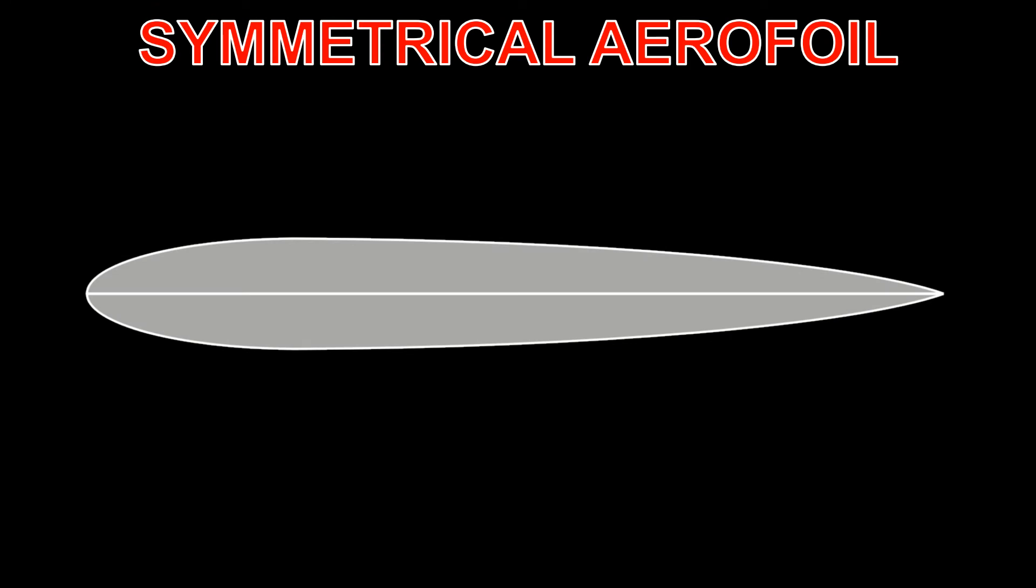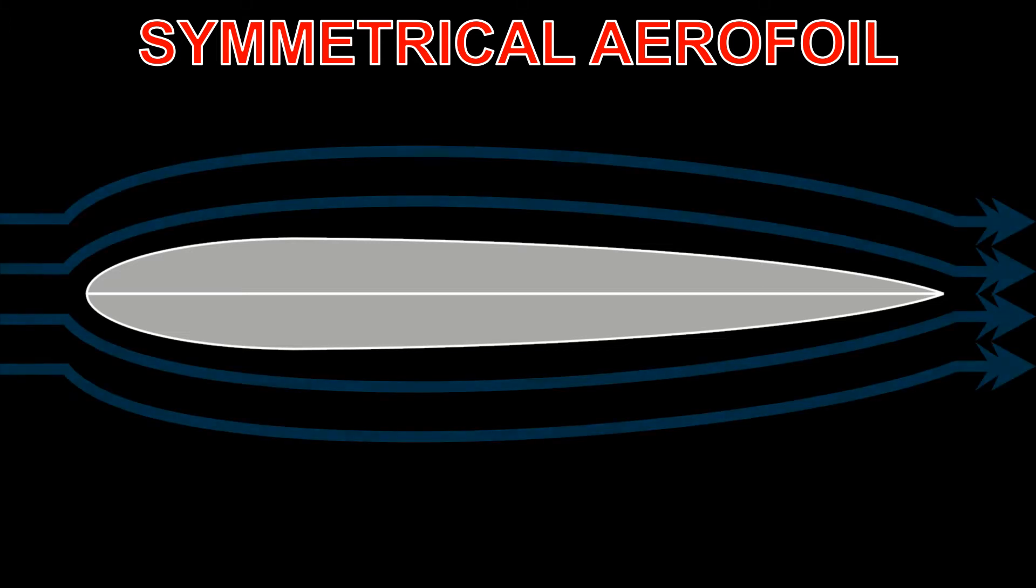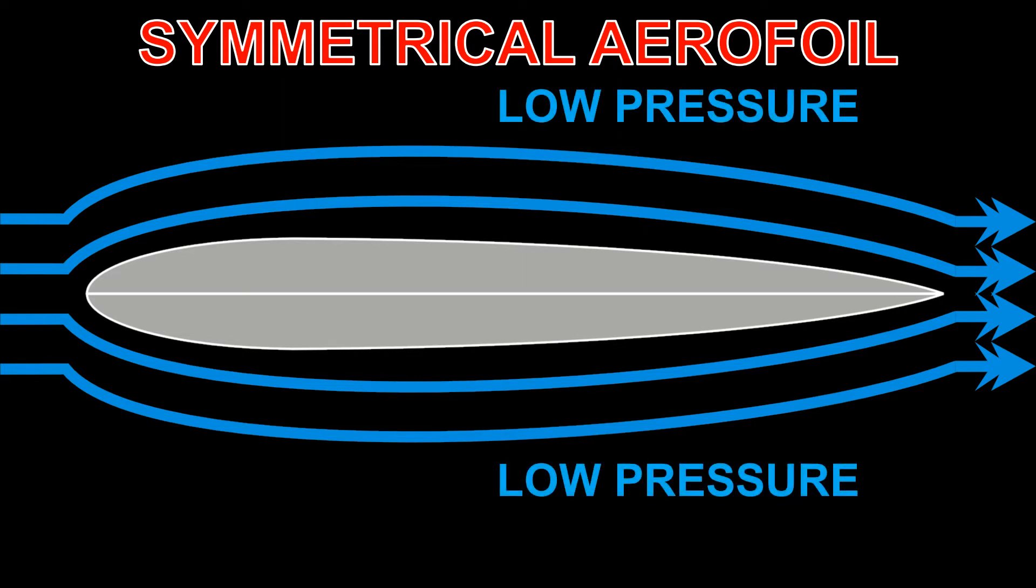A section such as the tail plane or tail fin is shaped as a symmetrical aerofoil. This means that the airflow will also be symmetrical on both sides. Both sides will produce a low pressure zone on the surface, as with the top of a wing, which will produce a lift force. However, these lift forces will also be symmetrical, and so will balance each other out. Therefore, the aerofoil is balanced and stays where it is.